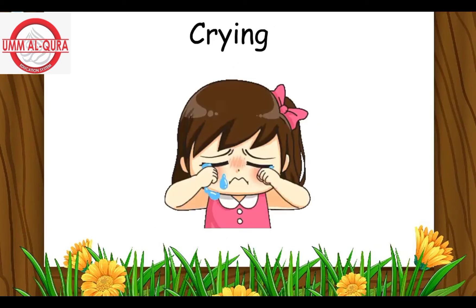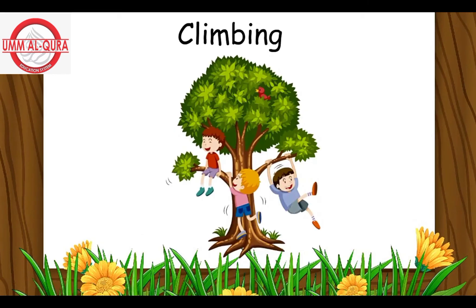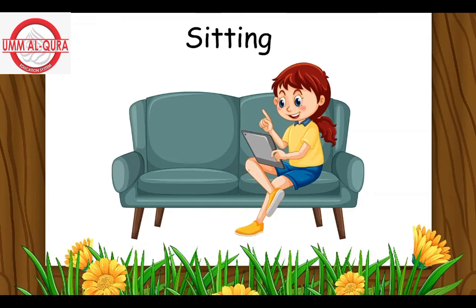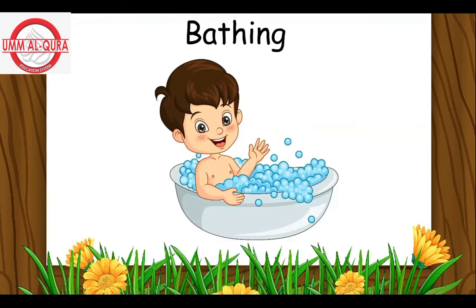The girl is crying — crying is an action word. The children are climbing the tree — the word climbing is an action word. The boy is clapping his hands — the word clapping is an action word. The girl is sitting on a couch — sitting is an action word. Baby is bathing in the tub — the word bathing is an action word.